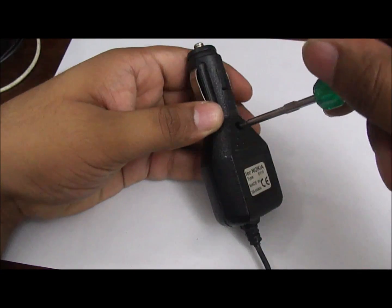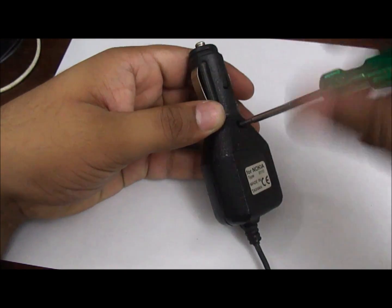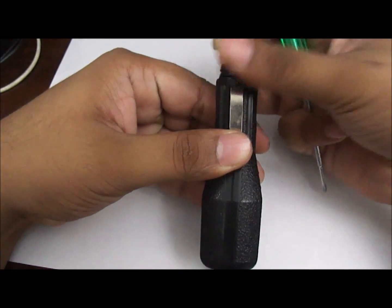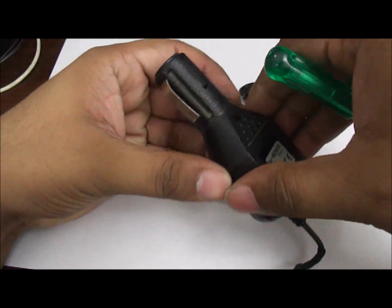We start by opening up the old charger. Here I'm opening up a decade old Nokia charger which puts out 8 volts DC and hence can't charge any of the modern smartphones.